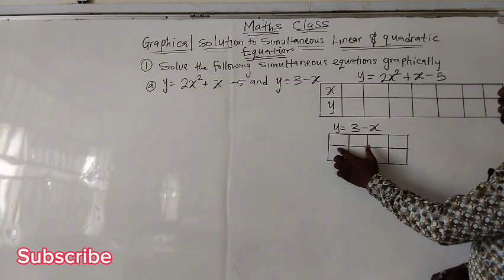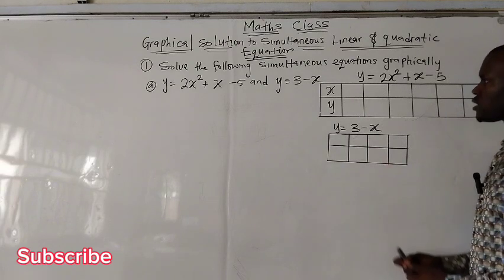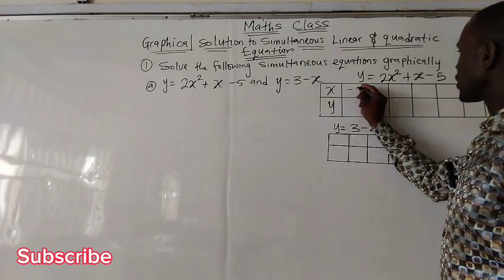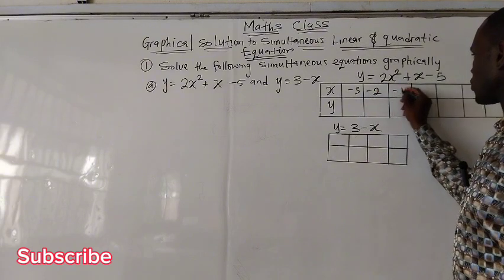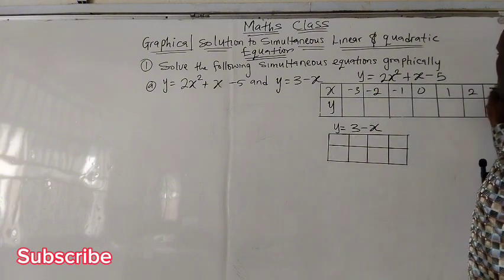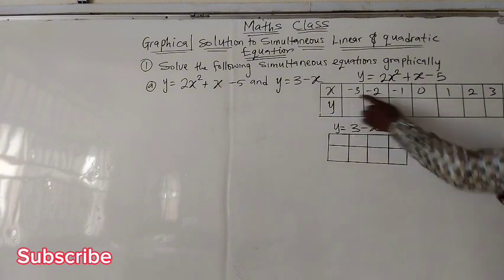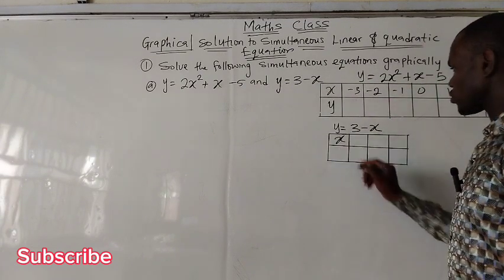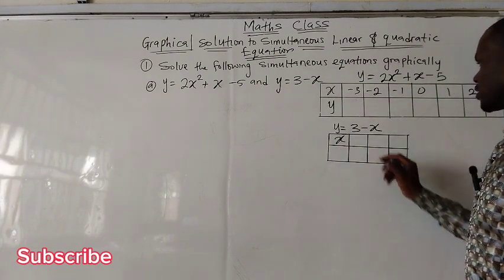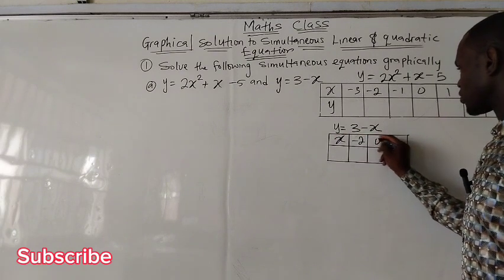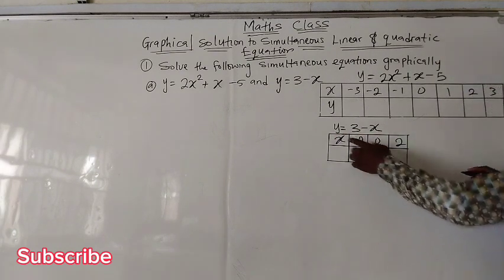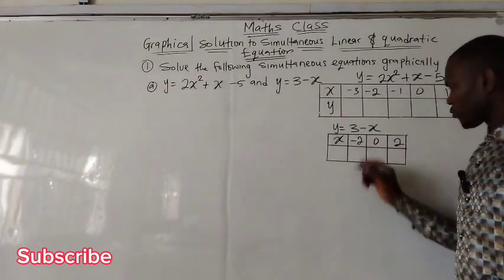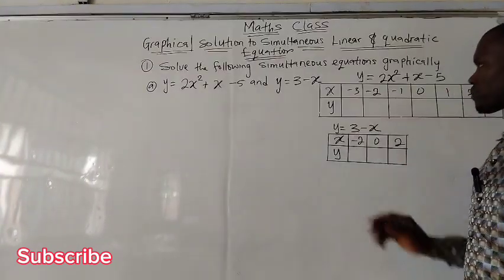We choose values for x and get values for y for both equations. Let's choose numbers from minus 3, minus 2, minus 1, 0, 1, 2, and 3 for the quadratic. For the linear, let me choose between minus 2, 0, and 2. Any value you choose for x must give you a corresponding value of y.